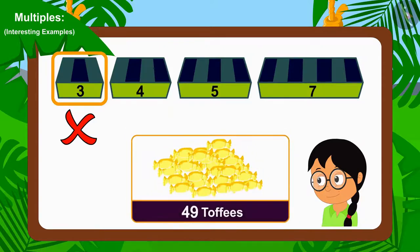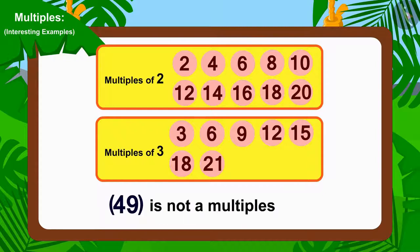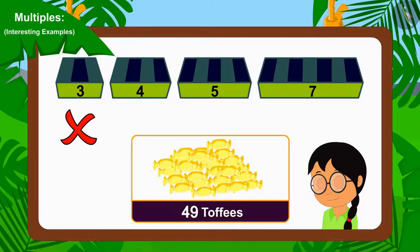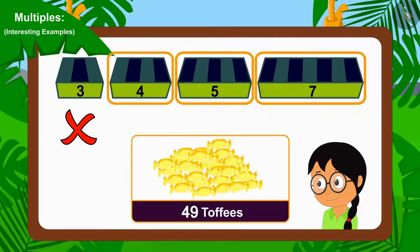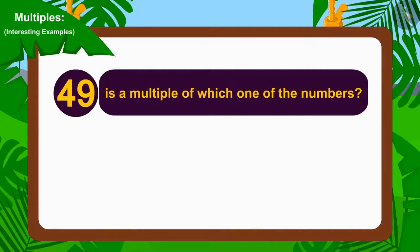And children, you remember the multiples learned in the previous video, don't you? Because we cannot divide 49 by 3, we can say that 49 is not a multiple of 3. This means which group will Meenu have to use to distribute the 49 toffees equally? To find this out, we just have to find that 49 is a multiple of which one of the numbers.